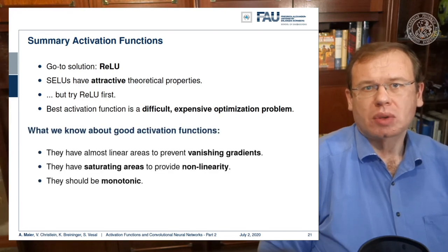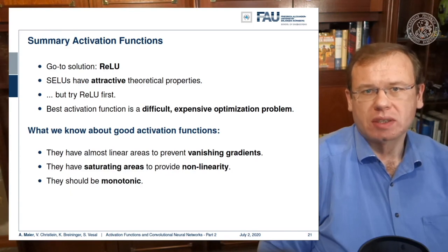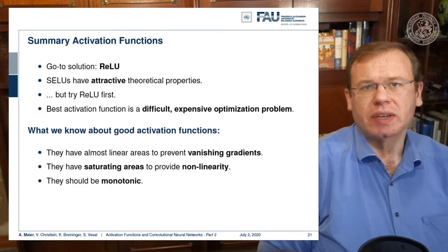What we do know about good activation functions is what we know from these observations. They have almost linear areas to prevent vanishing gradients. They have saturating areas to provide non linearity. And they should be monotonic, as this is really useful for our optimization.